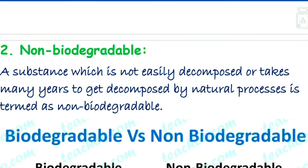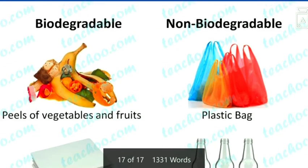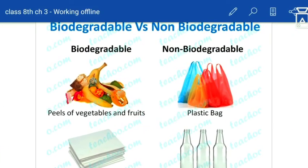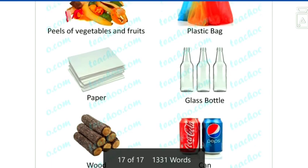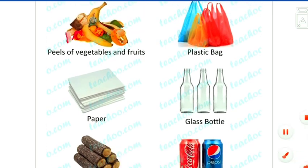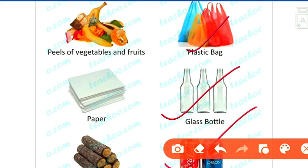A substance which is not easily decomposed, or takes many years to decompose by natural processes, is termed as non-biodegradable — like plastic. Plastic is non-biodegradable; if you put it in the earth it will not decompose for a very long time. Similarly, plastic bottles and metals do not degrade or decompose easily; they do not break down into simpler forms.